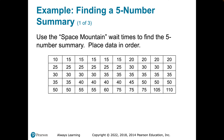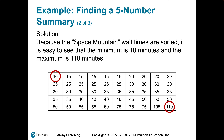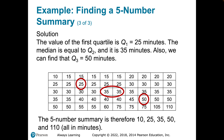Let's go through an illustration. We have some wait times for Space Mountain and we want to find the five-number summary. The first thing we do is place the data in order from lowest to highest — that's already been done. We need the high and low numbers: the low is 10, the high is 110. So we already have two-fifths of our five-number summary. Next, we come to the center. We have an even number of values, so we average the two middle values, which gives us 35. That's our Q2, the median.